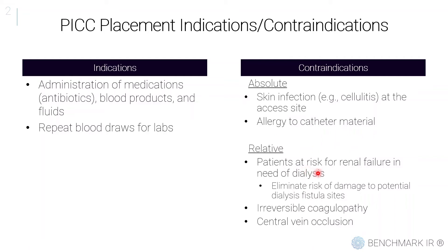You can also use a PICC for giving blood products, fluids, and repeat blood draws for labs. Absolute contraindications include skin infection or cellulitis at the access site — you don't want to place a PICC there as it risks introducing infection into the bloodstream. Always review patient allergies to catheter material. Importantly for PICC lines specifically, if a patient is at risk for renal failure and likely to need dialysis, in most cases you don't want to place a PICC line because it risks damaging the veins that could be used for fistula formation. Other contraindications include irreversible coagulopathy or central vein occlusion.